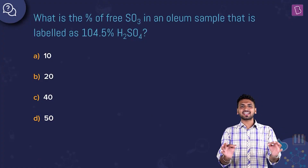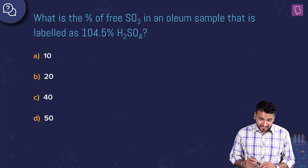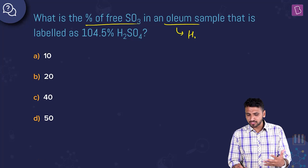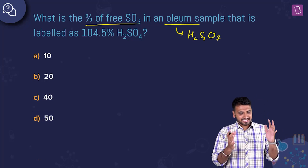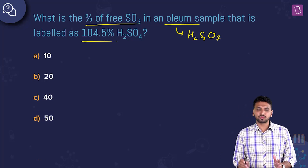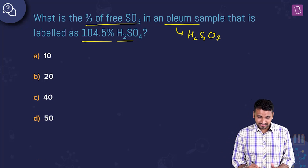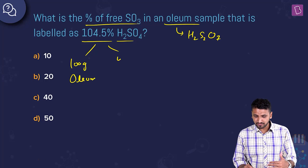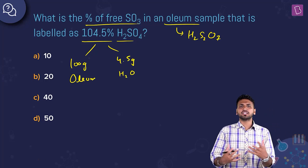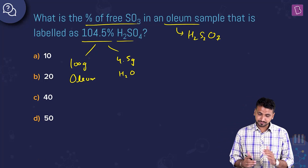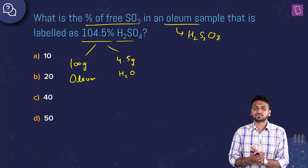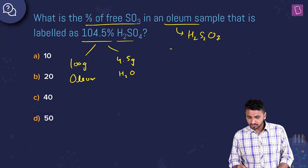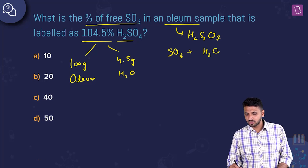Now we have a reaction-based numerical. What is the percentage of free SO₃ in an oleum sample labeled as 104.5% H₂SO₄? Oleum is H₂S₂O₇. A label of 104.5% means 100 g of oleum reacts with 4.5 g of water. This SO₃-oleum reaction is part of the contact process — the manufacturing of H₂SO₄. The key reaction is SO₃ + H₂O → H₂SO₄.